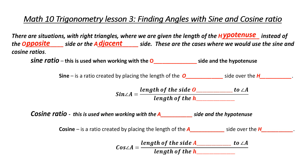What is the sine ratio? The sine ratio is used when we're working with the opposite side and the hypotenuse. It is created by placing the length of the opposite side over the hypotenuse. As a formula, we write it as: sine of angle A equals the length of the side opposite to angle A divided by the length of the hypotenuse.